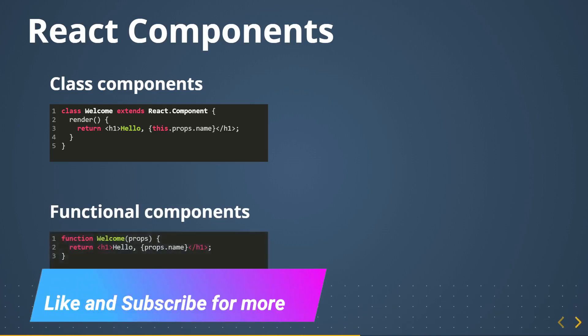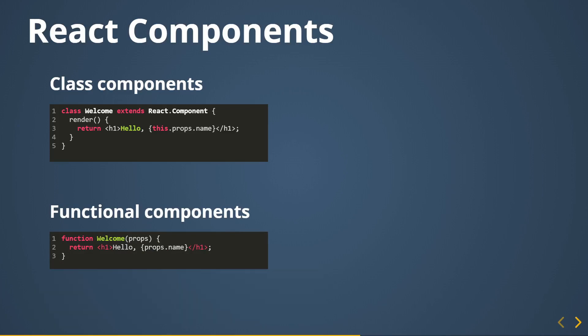After the React team introduced hooks, they also introduced functional components, which produce much more readable code. Functional components used to exist before but couldn't hold state. Now they can, so most of this course will be showing you functional components. A functional component is basically just a function — something like 'function Welcome(props) { return Hello {props.name}; }'.